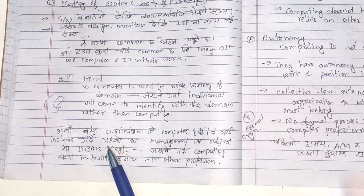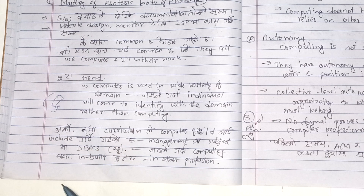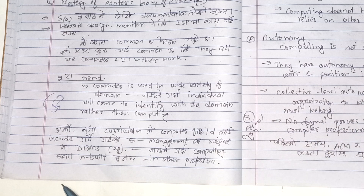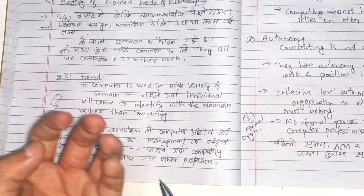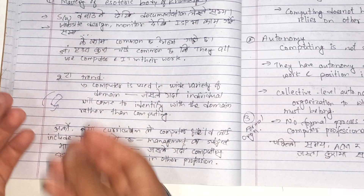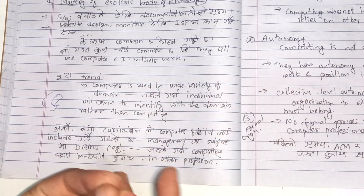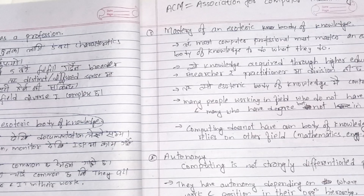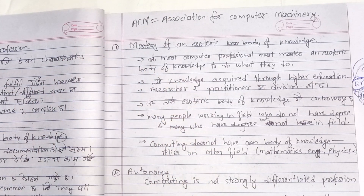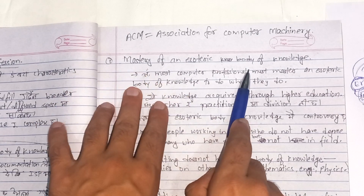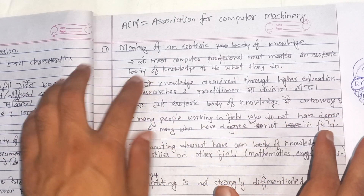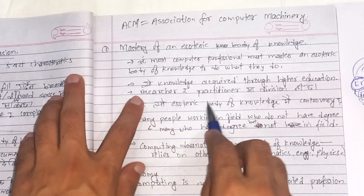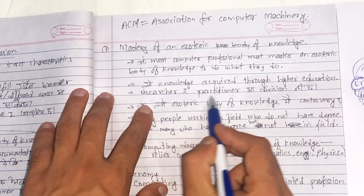They also have domain knowledge. A new curriculum for computing includes computer science and management subjects. These implement what is computing skill — in-built, acquired through higher education. The researcher and practitioner divide is also a division.